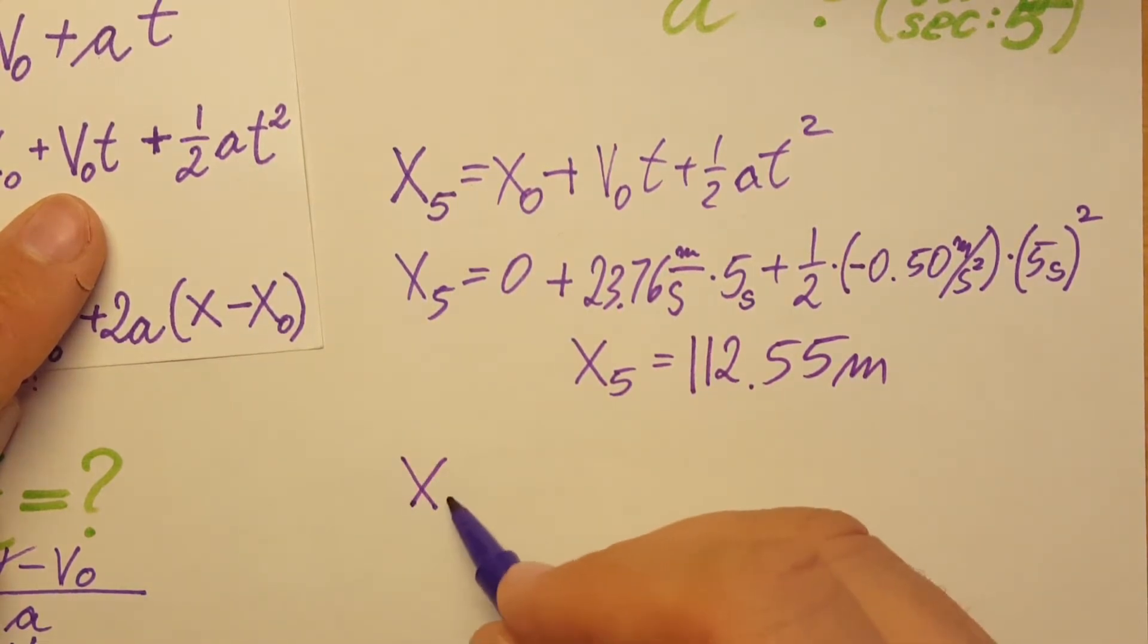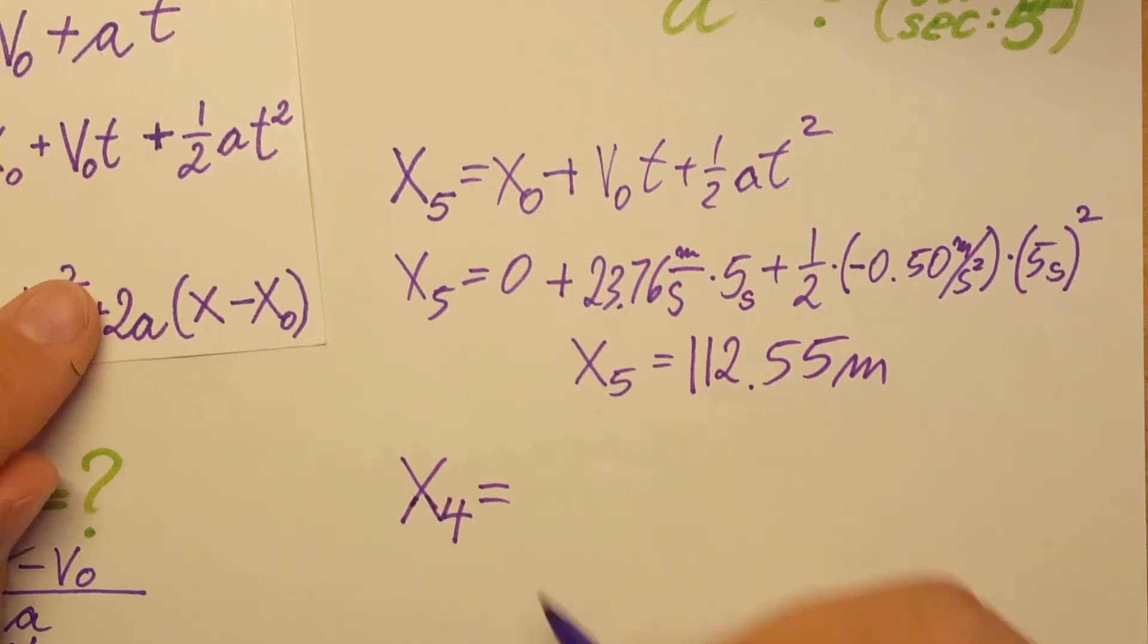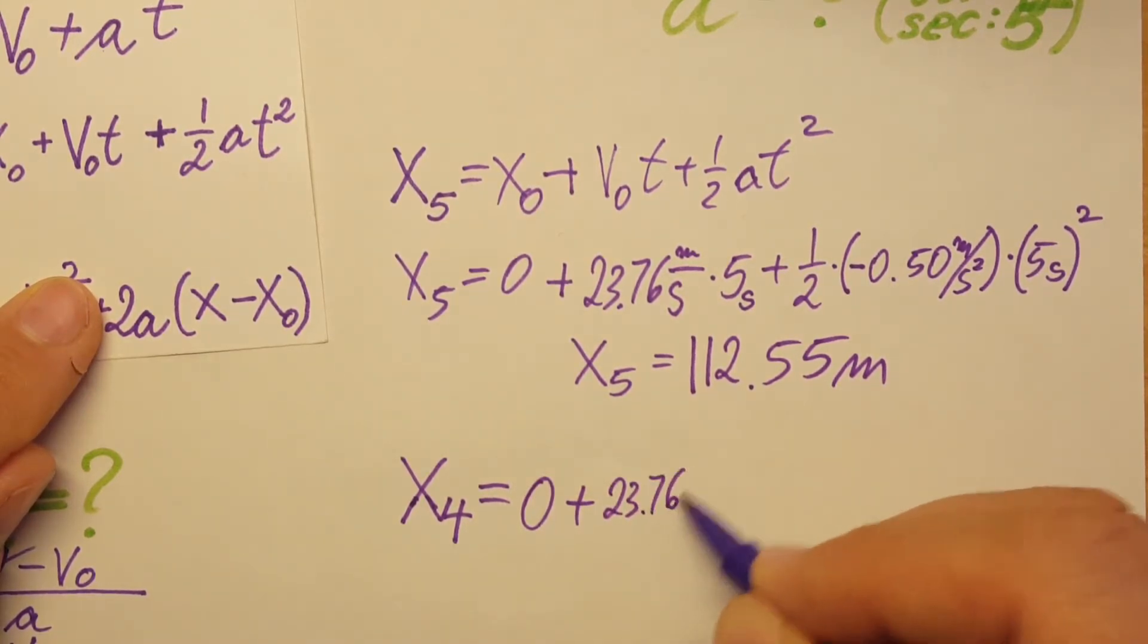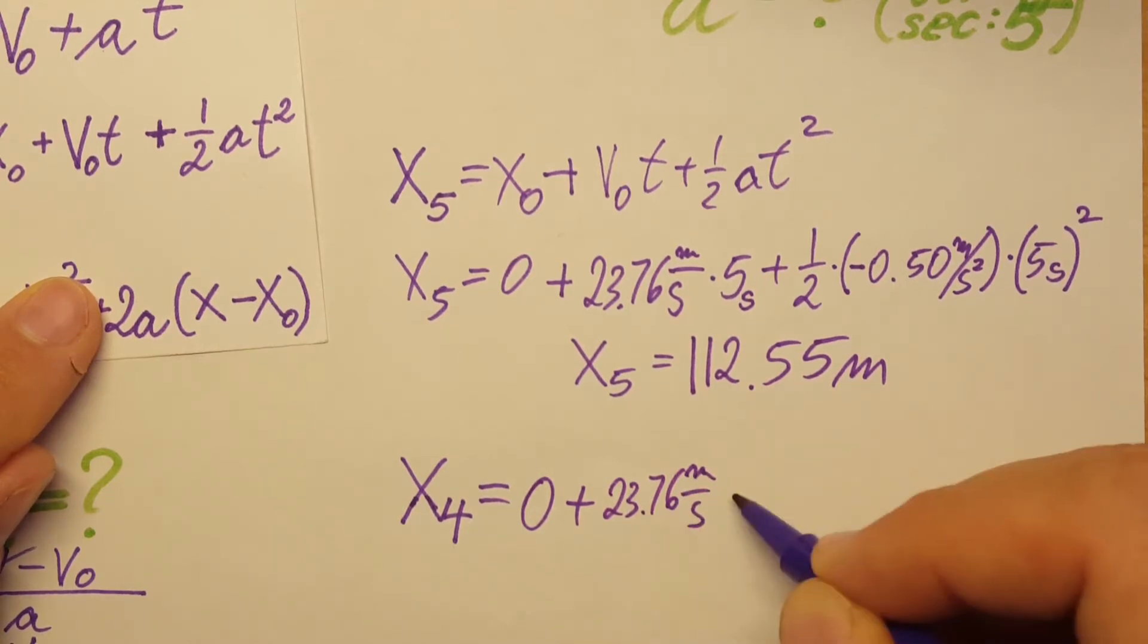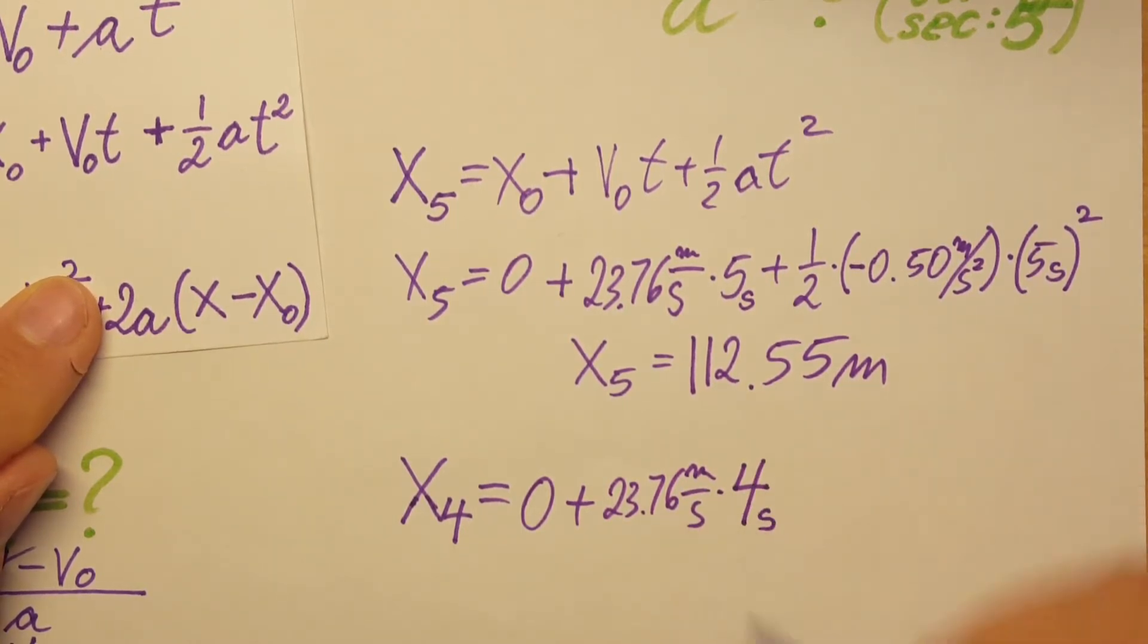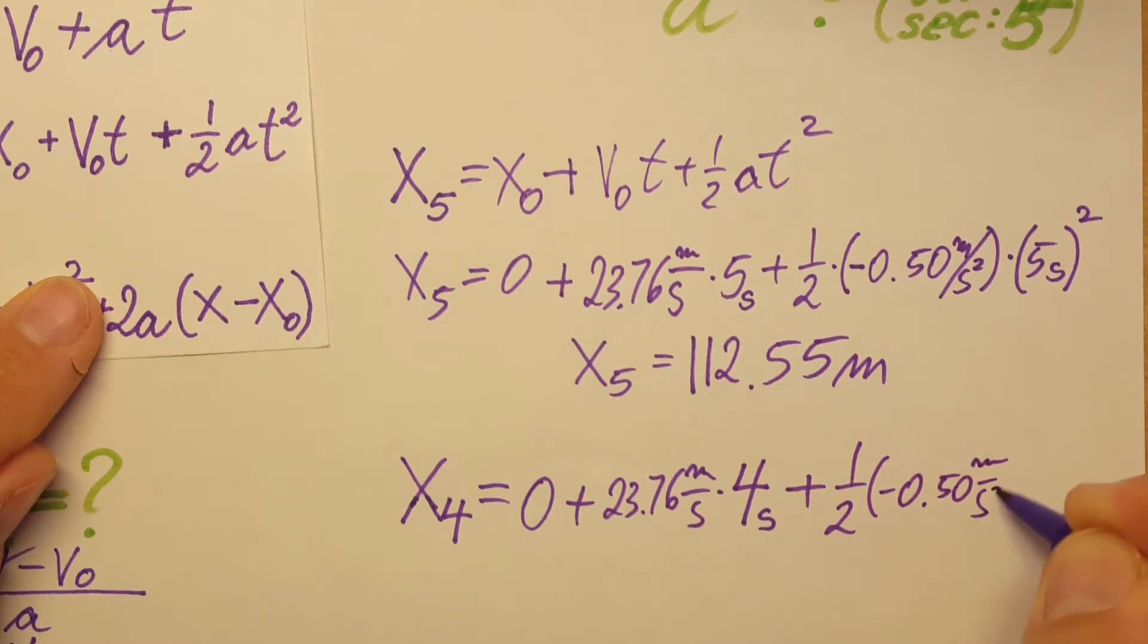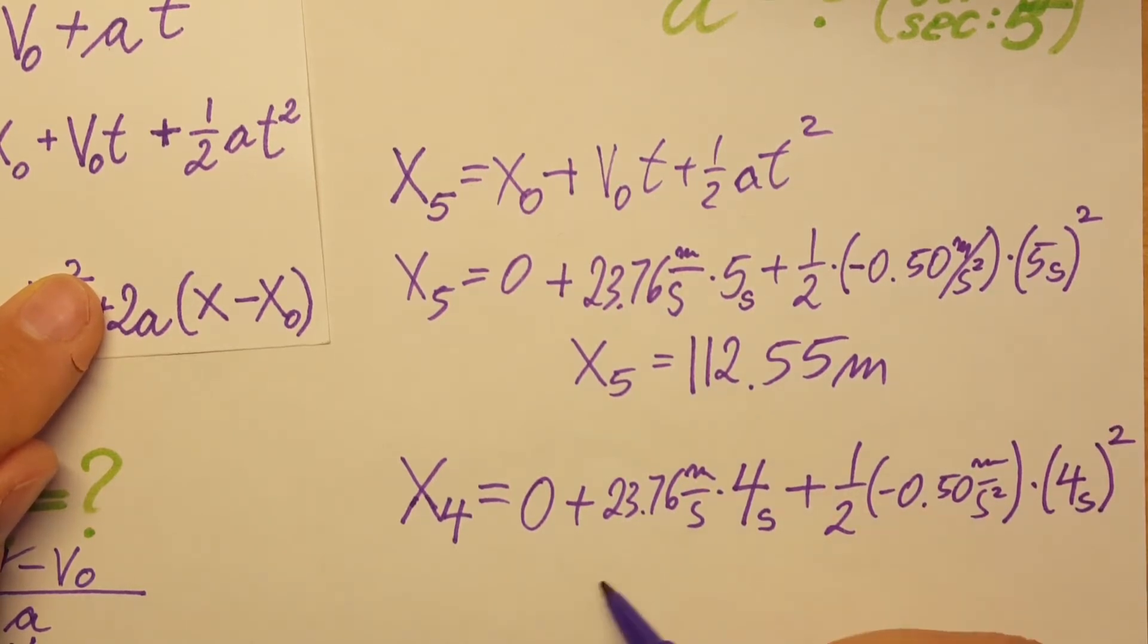Now we use the same formula but this time for second four. Plugging in: zero plus 23.76 meters per second times four seconds, plus one half times negative 0.50 meters per second squared times four seconds squared. Calculator time.